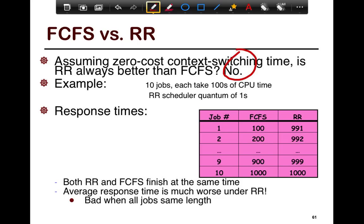An example is when you have all jobs at the same length. So you have 10 jobs, each takes 100 seconds in the CPU. What round-robin is going to do is penalize each of them equally. What FCFS is going to do is penalize some of them, but the other ones are going to run much faster. Hence, if you look at the overall average, FCFS is going to be better, but round-robin is more fair.